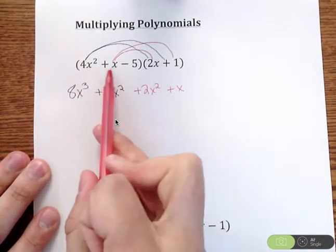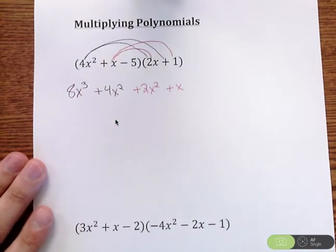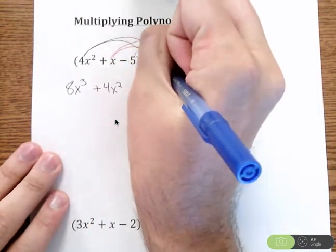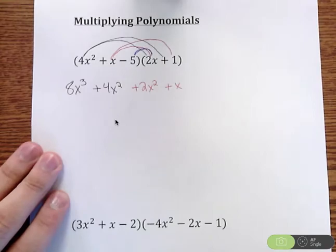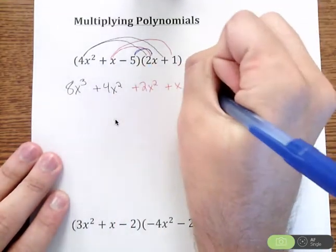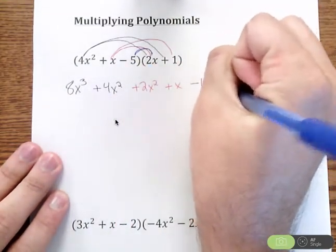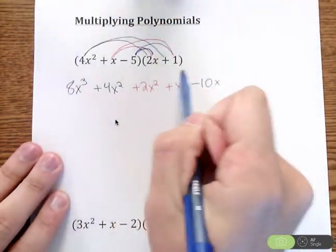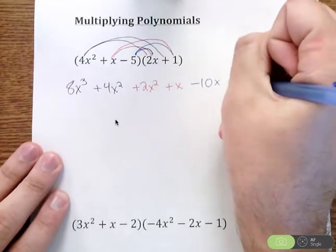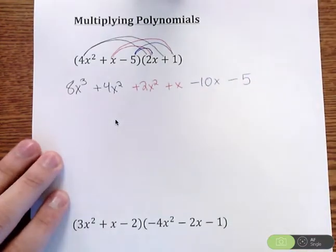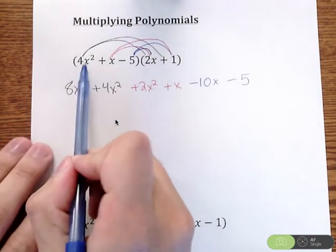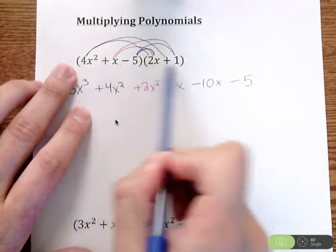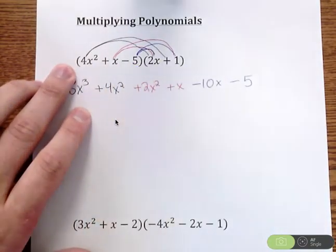Again, we're just taking each term and distributing it through. The third term is negative 5, so negative 5 times 2x is negative 10x. Then negative 5 times positive 1 is negative 5. So I took every single term in my front parentheses and distributed it through the second parentheses.